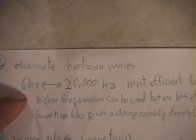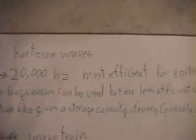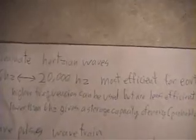Again, 6 hertz to 20 hertz is the most efficient for earth condition. Higher frequencies can be used, but they are less efficient for power. Lower than 6 hertz gives a storage capacity of energy, probably not useful. What I'm saying is that if you're going less than 6 hertz, you're getting rid of that antinode on the earth. The energy is just going to flow over the earth like a large storage capacity, like a capacitor type idea. But it's not useful for humans to be using industrial energy.